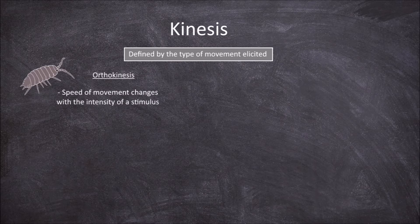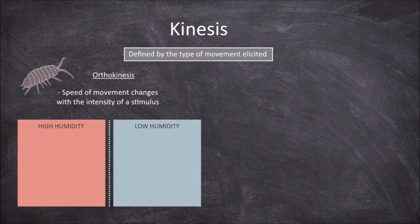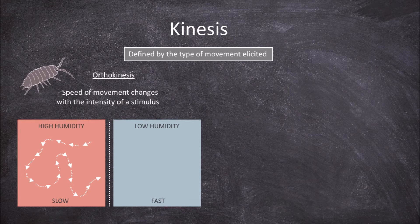An example of orthokinesis is observed in wood lice, in relation to the intensity of the stimulus, humidity. The higher the level of humidity, the lesser wood lice will move. The speed of movement reduces in humid environments and increases in dry environments. Wood lice rely on a humid environment to keep their bodies moist and to avoid drying out. This reduced level of activity when in a humid environment keeps them in a more humid environment, whilst increased activity when in a drier, less humid environment helps move them back into a more humid environment, to help their survival and avoid desiccation.